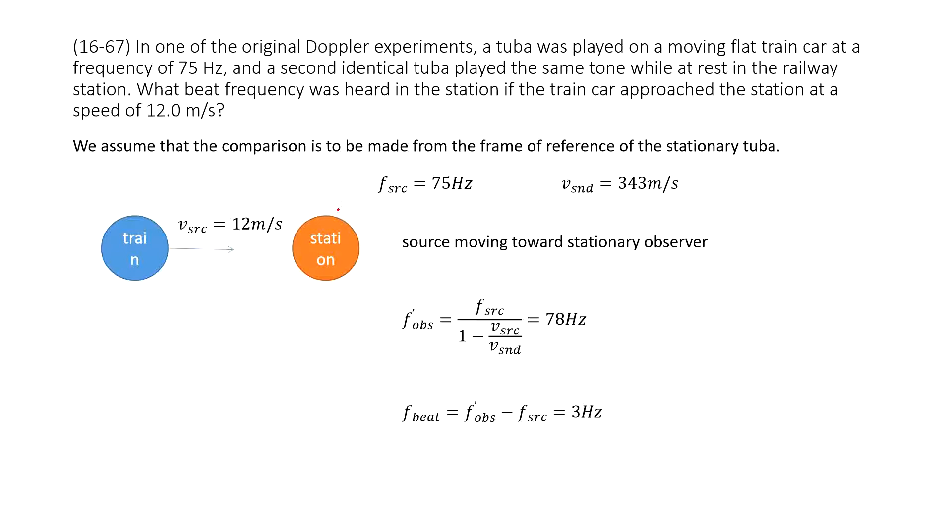In this problem, we talk about the Doppler experiment. We can see a tuba on the train with initially the frequency of the source is 75 hertz. And then this train moves towards the station with a speed of 12 meters per second.